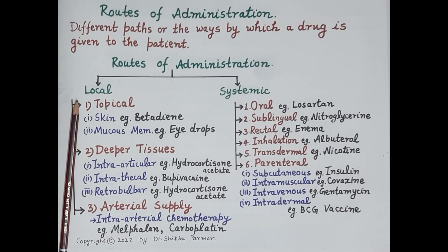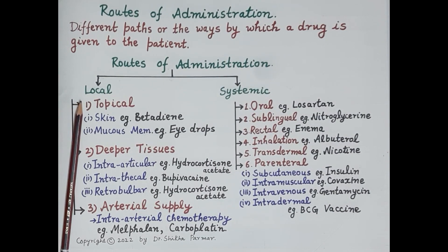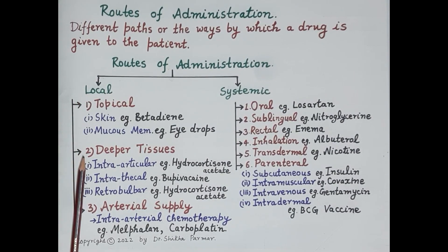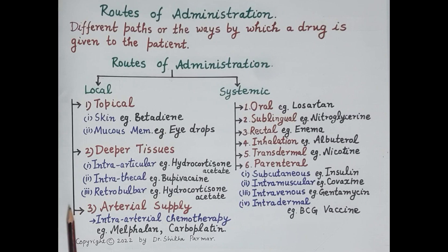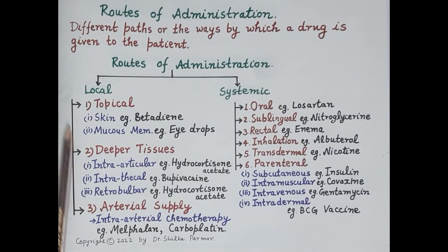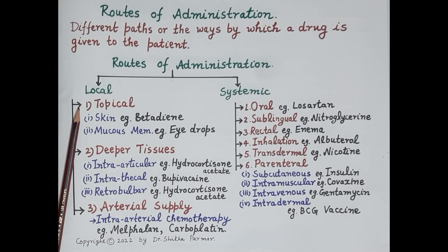There are mainly three types of local routes of drug administration: drugs applied topically, drugs injected in the deeper tissues, and drugs injected in the arterial supply.